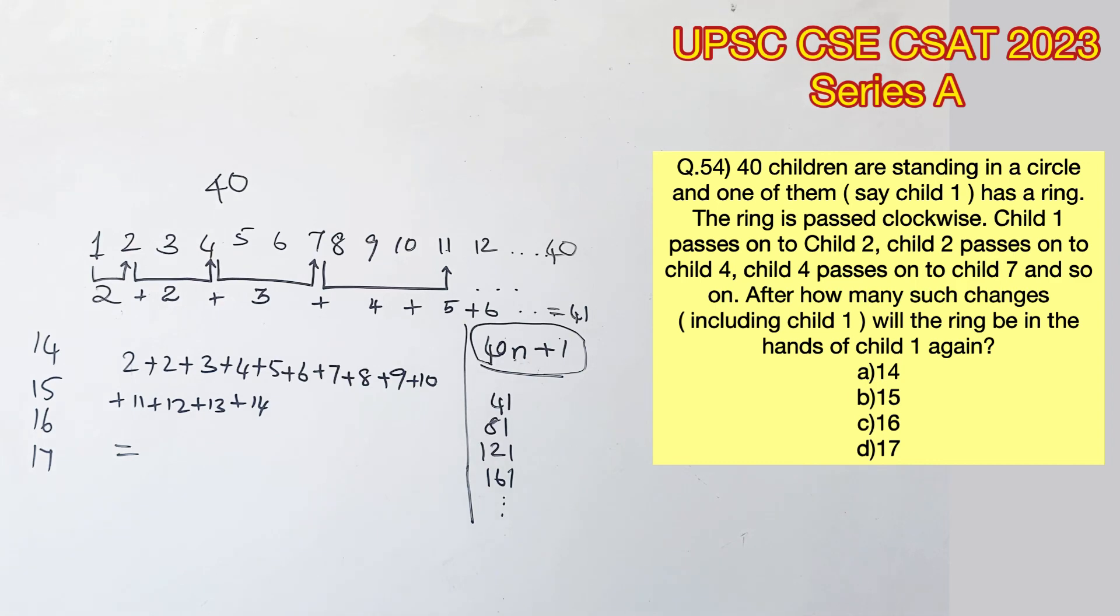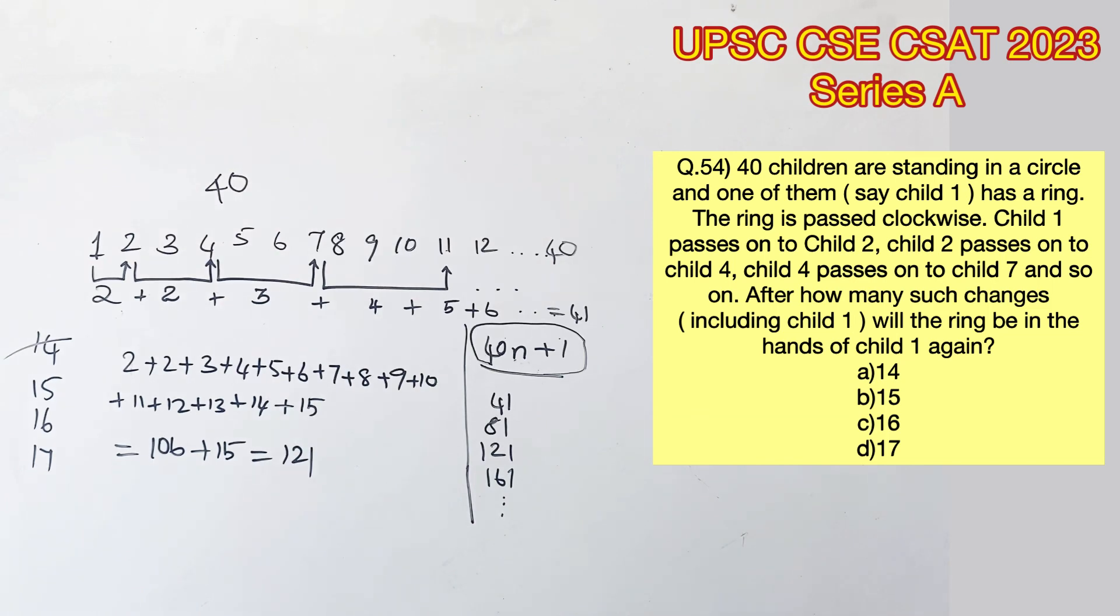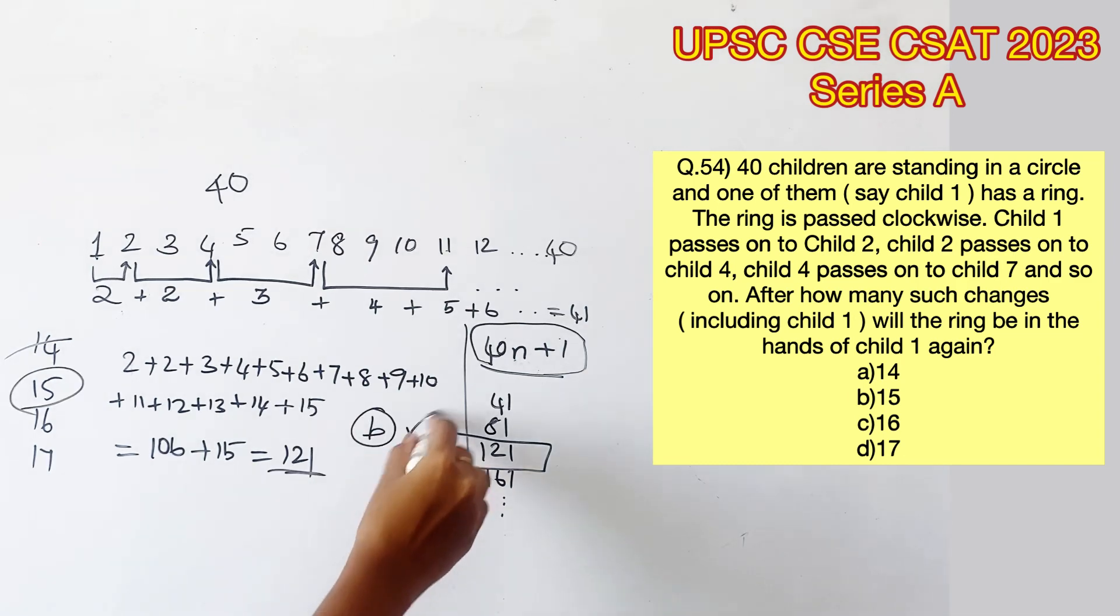Adding till the 14th change, we will get 106, which is not in the form of 40n plus 1. So let's add the 15th change to it, which will provide us with 121. This is in the form of 40n plus 1. Therefore, the ring has reached child 1 again. So option B is the right answer.